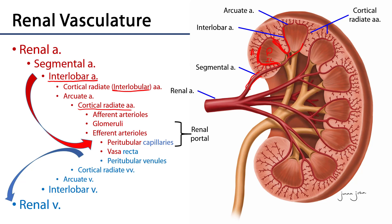Arcuate arteries, much like interlobar arteries, also give off cortical radiate arteries. These cortical radiate arteries supply afferent arterioles, which supply the glomeruli — the specialized capillary beds that are part of the renal corpuscles where glomerular filtration occurs, the movement of materials from the cardiovascular system into the nephron. From there, blood travels through efferent arterioles, which supply both peritubular capillaries and vasa recta. These vasa recta are specialized vessels within juxtamedullary nephrons. Drainage then follows: peritubular venules into cortical radiate veins, into arcuate veins, into interlobar veins, and finally into renal veins.